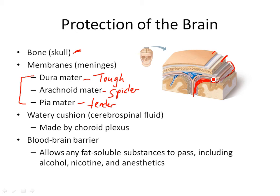The pia mater is real thin and really hard to see on the sheep brain, but you will see the dura mater and the arachnoid mater when you do that dissection. These three layers basically make a sac that the brain sits in — the brain is enclosed in this sac. Inside that sac you have a watery fluid called the cerebrospinal fluid, abbreviated CSF, which allows the brain to sort of float inside the cranial cavity.